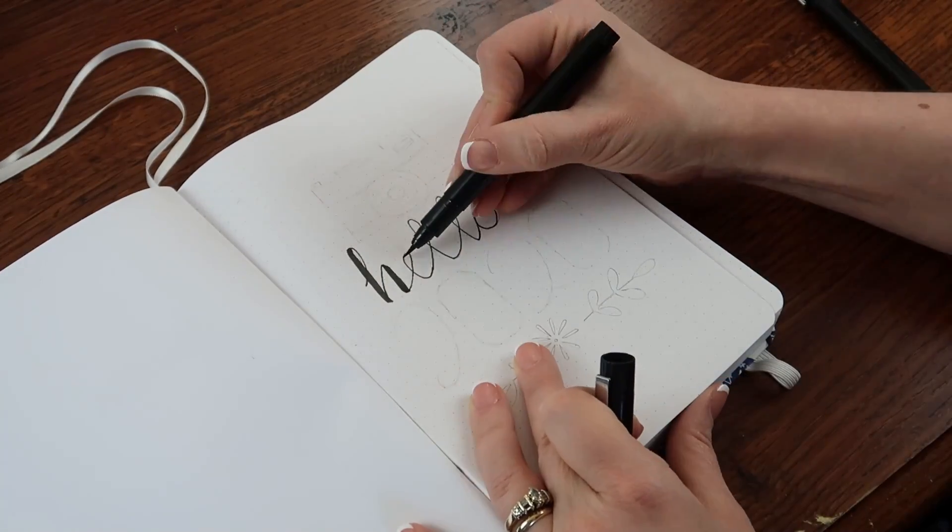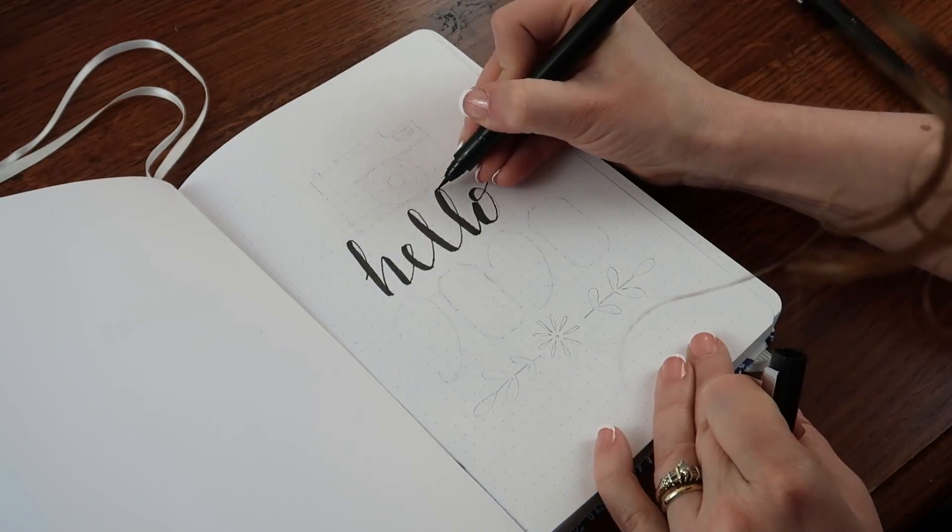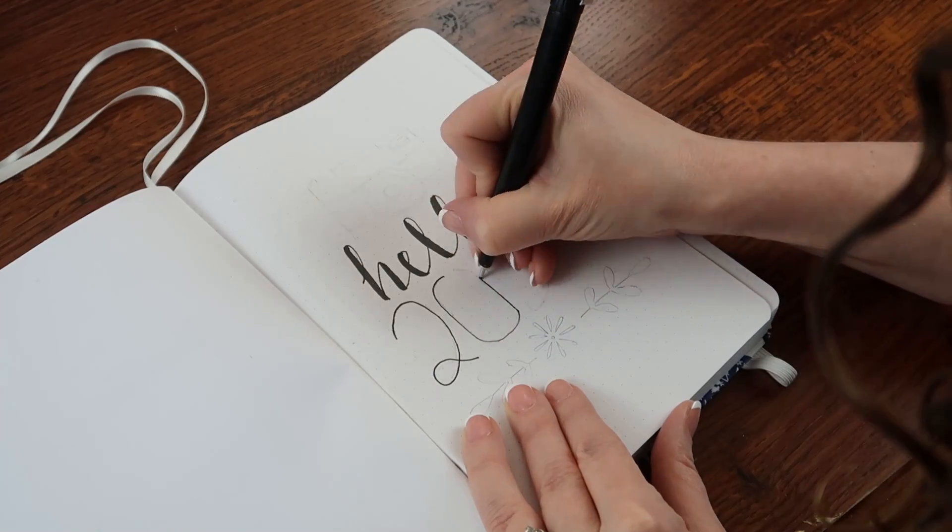For this front page I kept it pretty simple. I just have hello 2020 written down and then a camera and I just kind of did a little bit of doodles here and there.